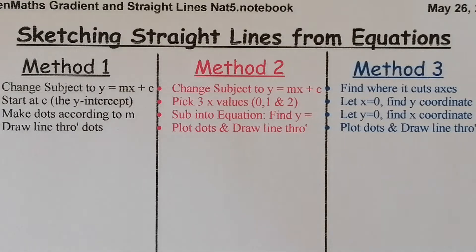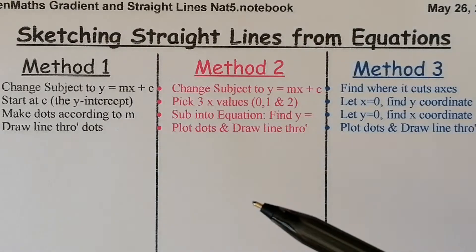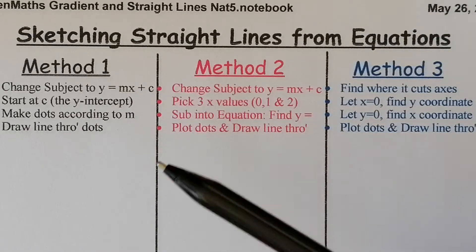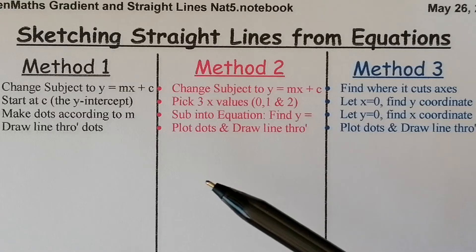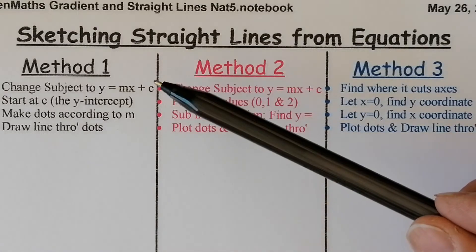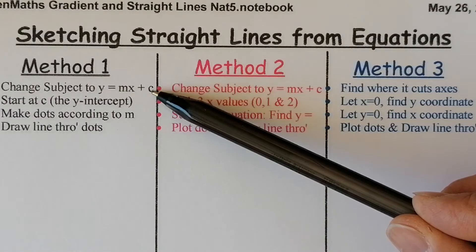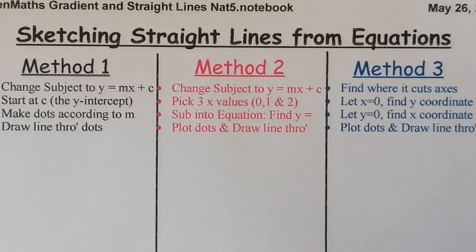Today we're learning to sketch straight lines from equations. I'm going to go over three separate methods to show how we can sketch a straight line once we've been given its equation. This is a follow-on video from the first one based on gradient, and the second one around working out the c value, or the y-intercept, where the line will cut through the y-axis.